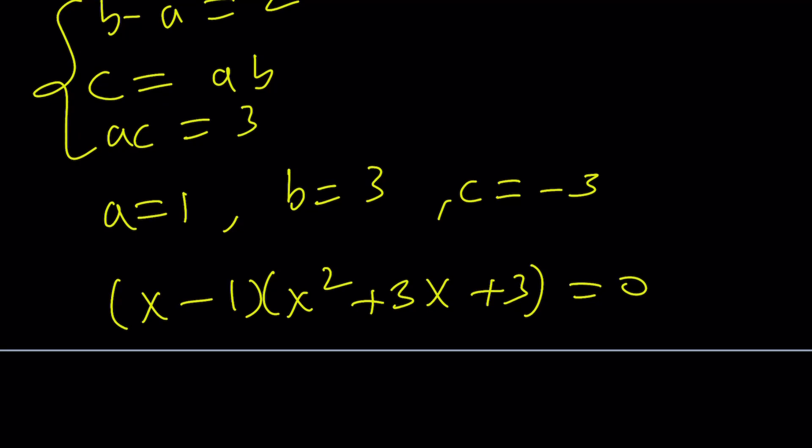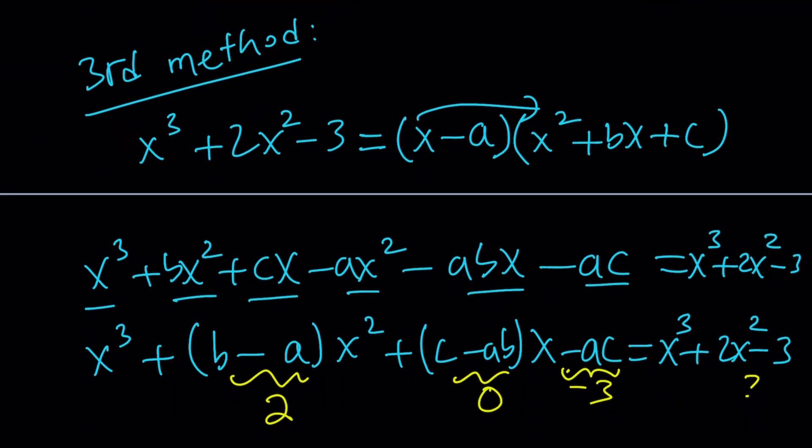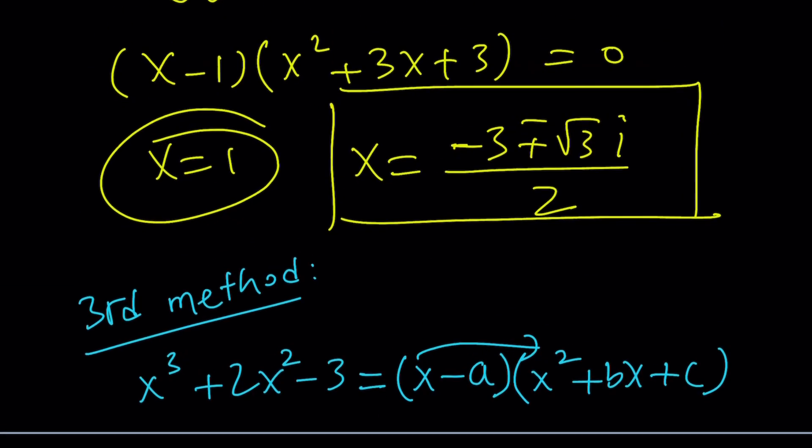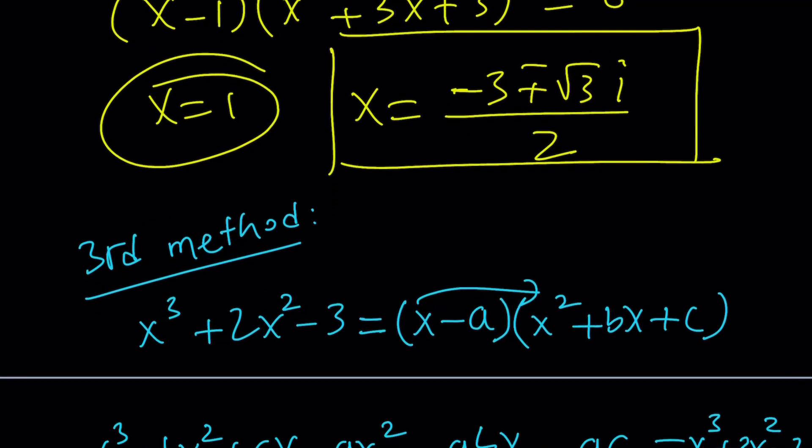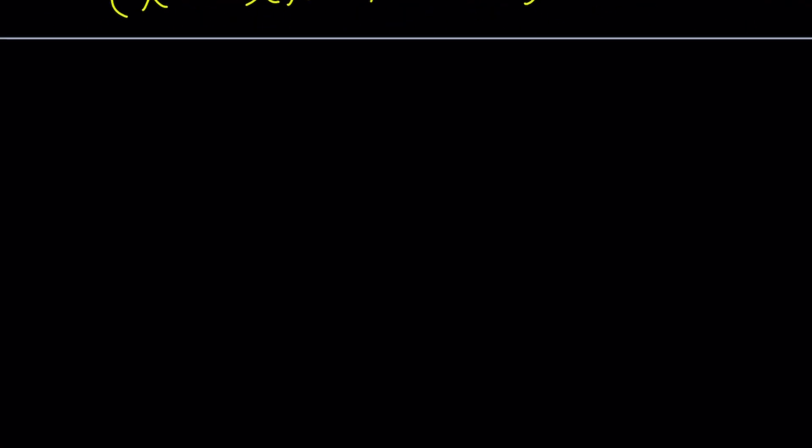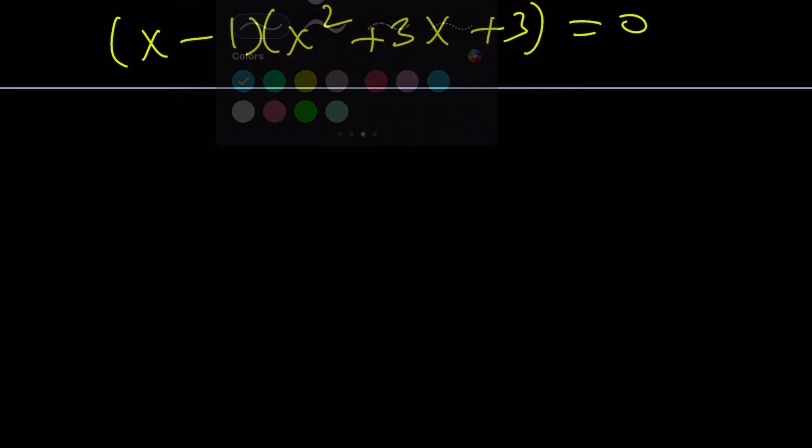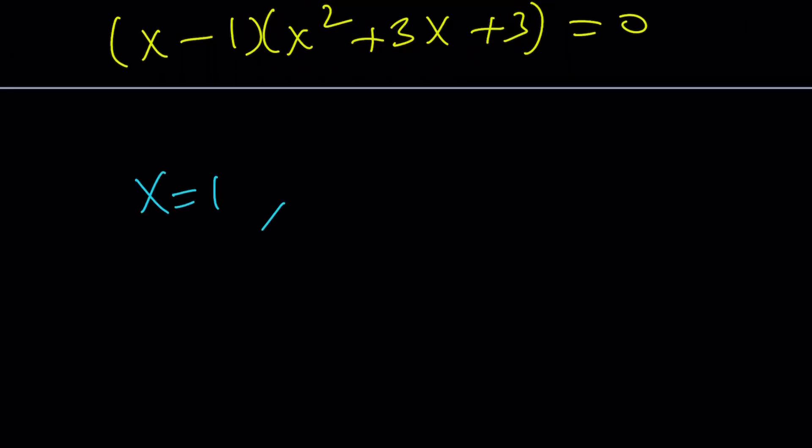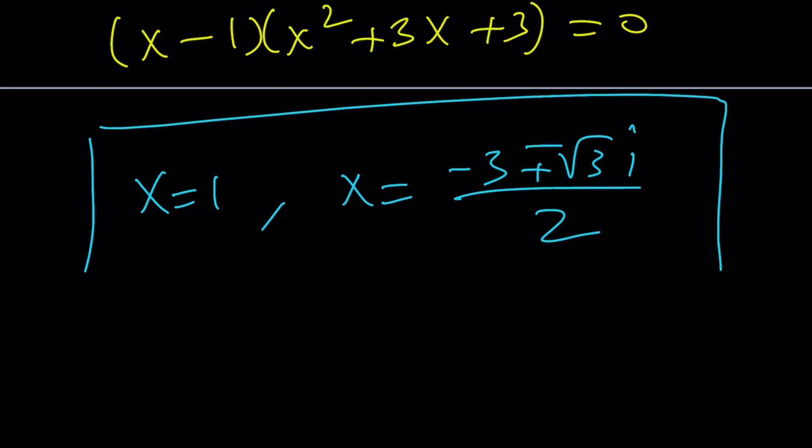And the solutions are going to be the same. Now, I've got to show you the graph, also, briefly talk about the fourth method because I promised to do that, right? Okay, so, but anyways, the solutions from here are going to be, again, x equals 1 and x equals negative 3 plus minus root 3 times i divided by 2. Two complex non-real solutions and one real solution.